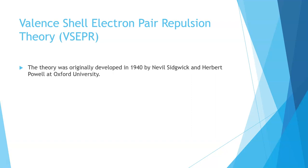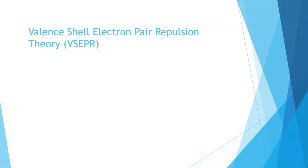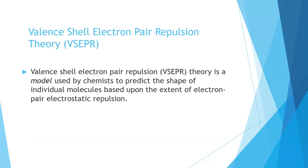Valence shell electron pair repulsion theory was originally developed around the 1940s at Oxford University. It was then refined further at University College London and is now the prevailing theory that explains how molecules arrange their bonds around a central atom, and the shapes that give rise to the way molecules behave.